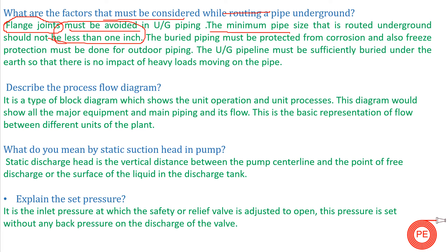The minimum pipe size that must be routed underground should not be less than one inch, because the pipe may collapse because of the earth load. Generally, pipes should be greater than two inches. The buried pipeline must be protected from corrosion, and freeze protection must be done for outdoor piping. When we do underground piping, we provide some protection from corrosion; some epoxy coatings are done on the pipes. The underground piping must be sufficiently buried under the earth so that if there is some heavy load movement, your pipe doesn't get damaged.